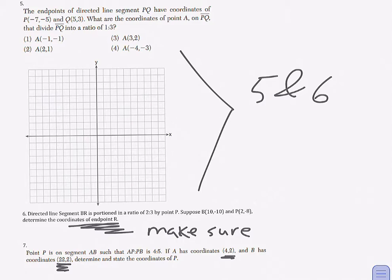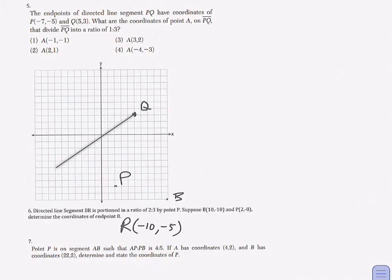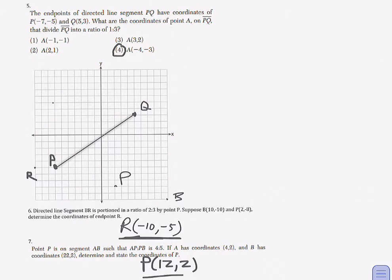Okay, unpausing the video. You can see I've given you just the answers alone for now. For question five, the answer is negative four, negative three. For question six, the endpoint we're looking for is ten, negative five. And for question seven the answer was twelve comma two.